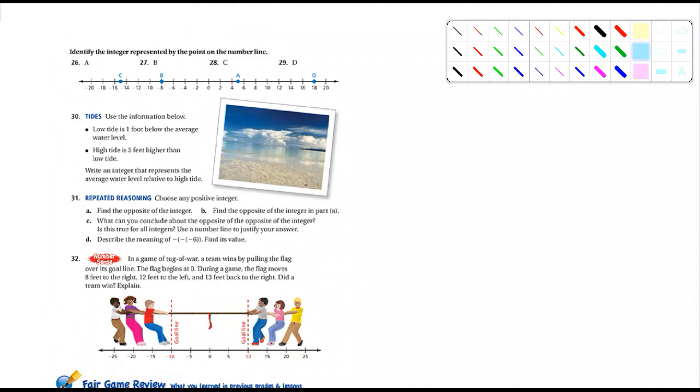identify the integer represented by the point on the number line. So, 26, 27, 28, 29. So you're going to identify whatever D would be, or B would be. In other words, where it falls on the number line. What does that mean? Do you just write the number below? Well, so here's the number line. Here's 0. Okay.